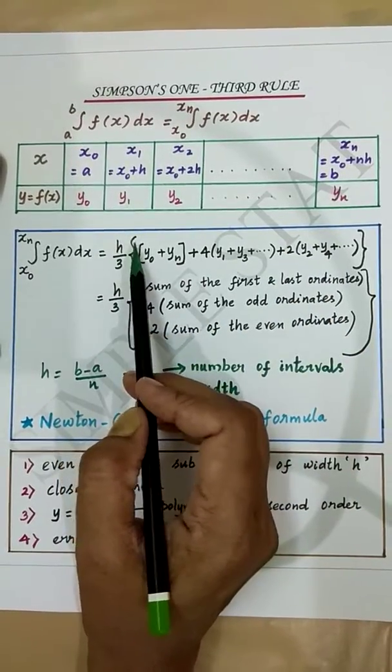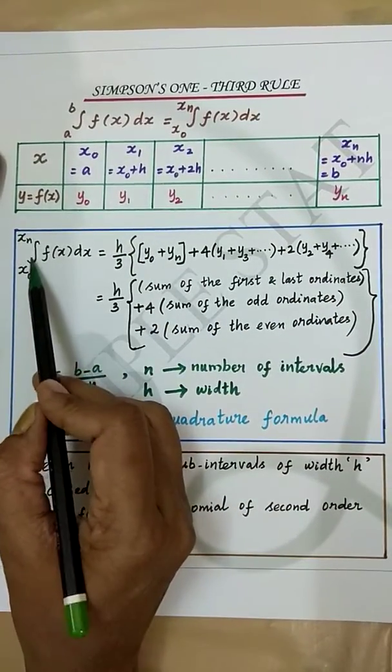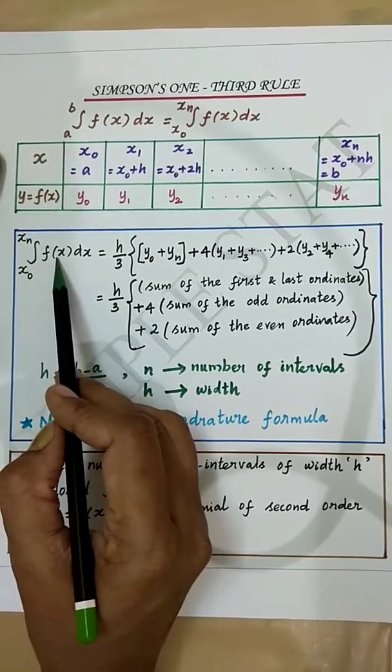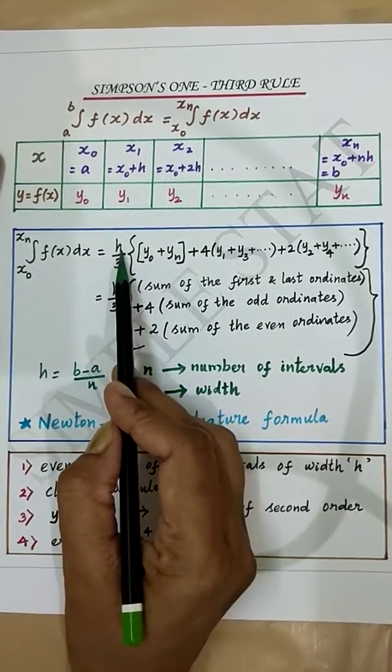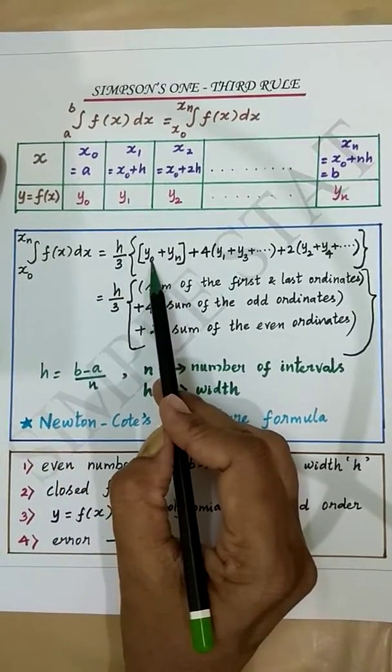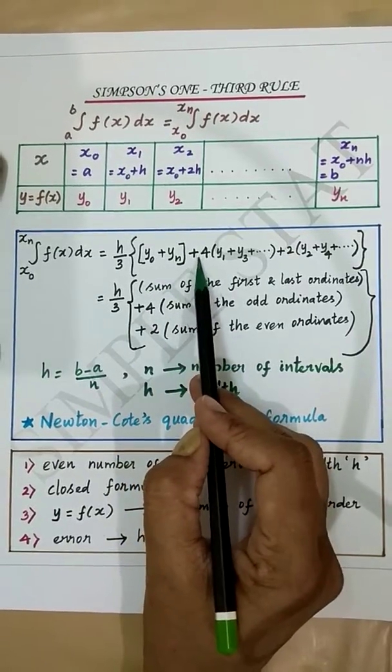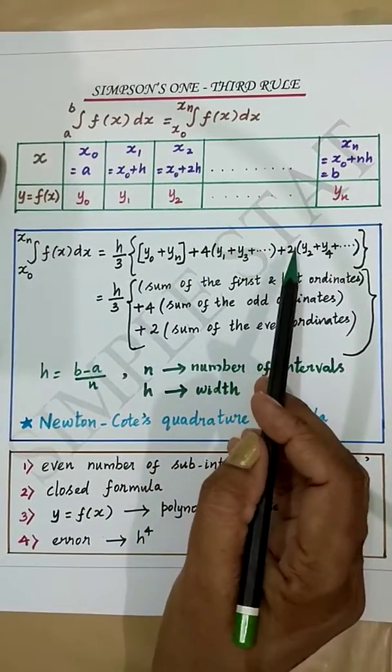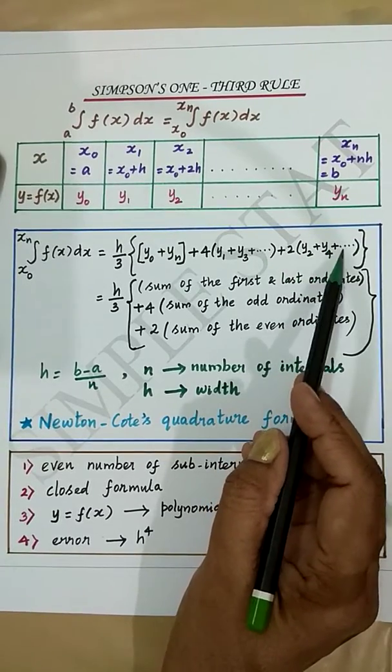Simpson's one-third rule is given by: the integral from x₀ to xₙ of f(x)dx equals h/3 times [y₀ plus yₙ plus 4 times (y₁ plus y₃ plus...) plus 2 times (y₂ plus y₄ plus...)].